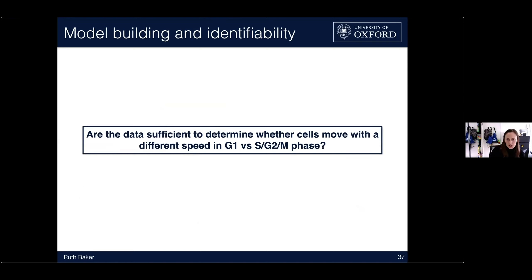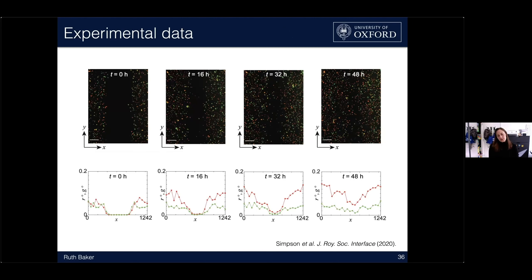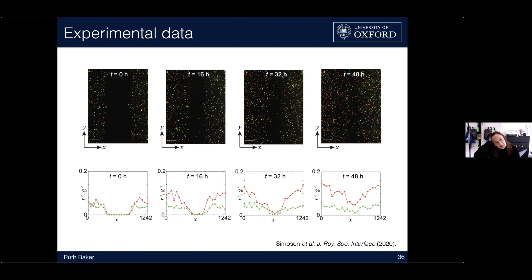The biological question we're asking of the data is: are they sufficient to determine whether cells move at different speeds in G1 versus S/G2/M phase? This is motivated by the go-or-grow hypothesis — prevalent in the cancer literature — which proposes that cells are either motile and non-proliferative or proliferative and much less motile. We're asking whether a simple scratch assay with FUCCI data could distinguish whether cells move with different speeds according to their cell cycle phase.